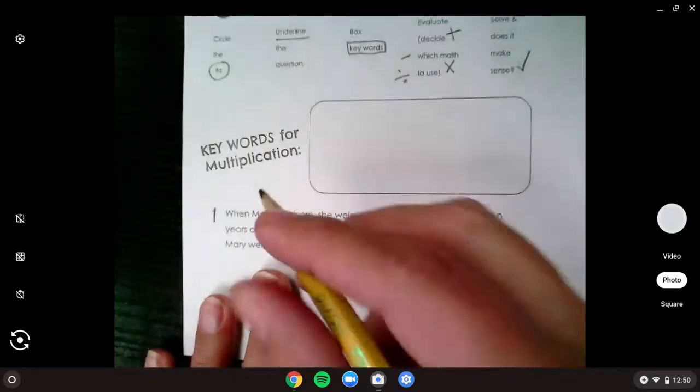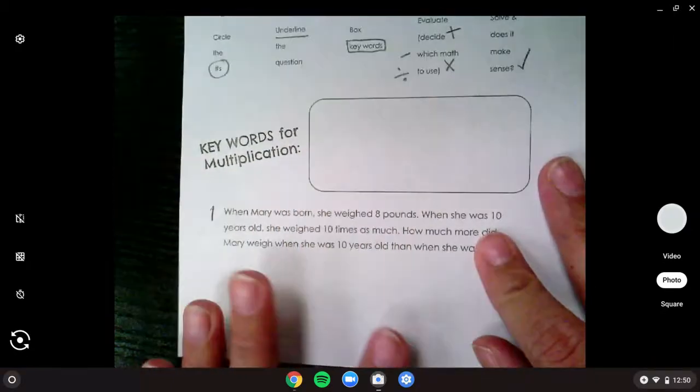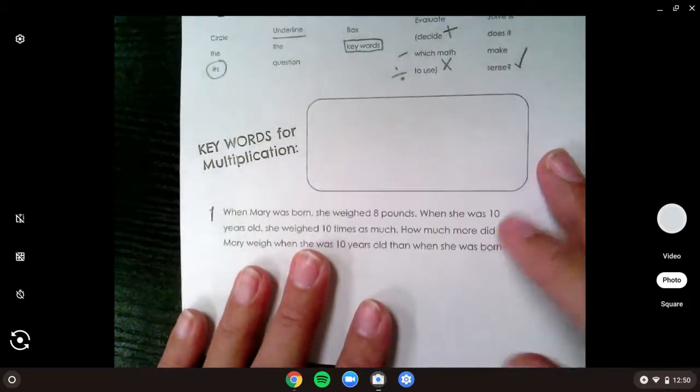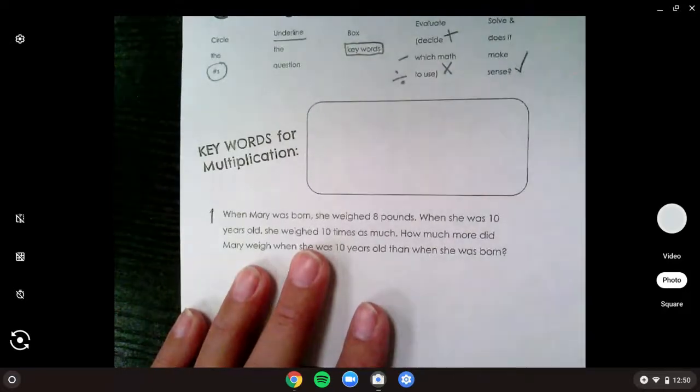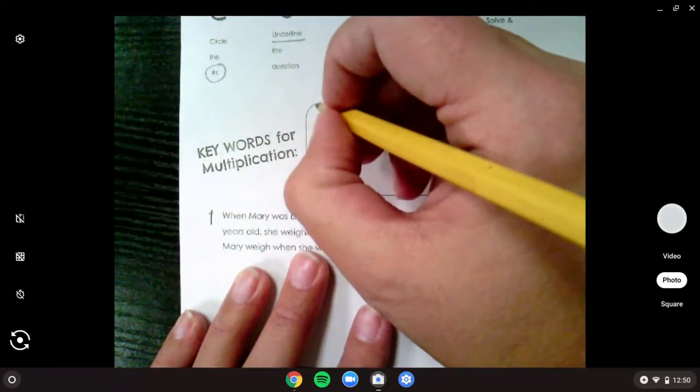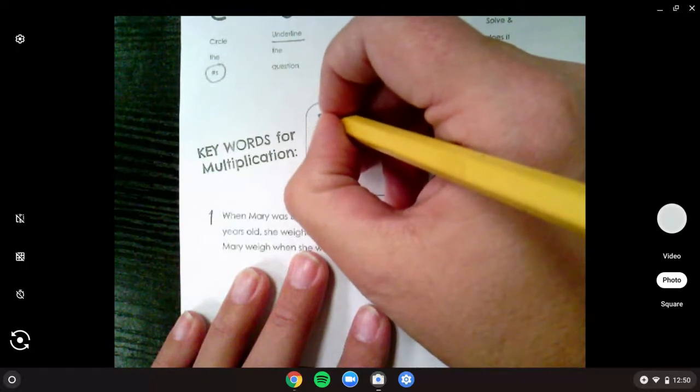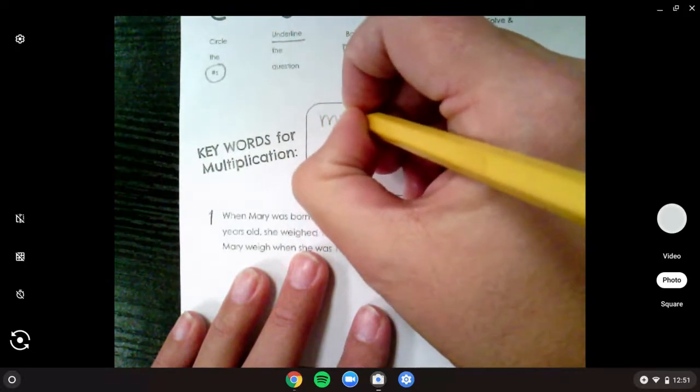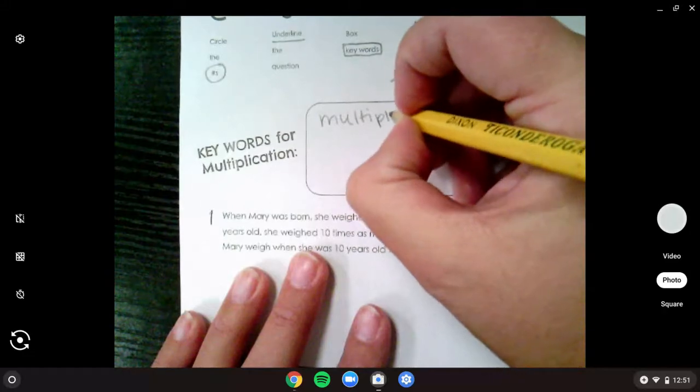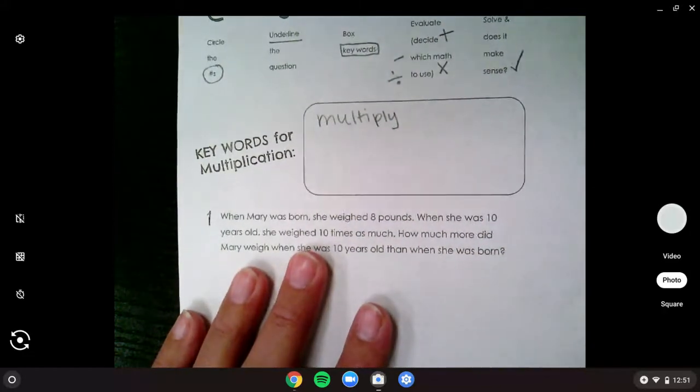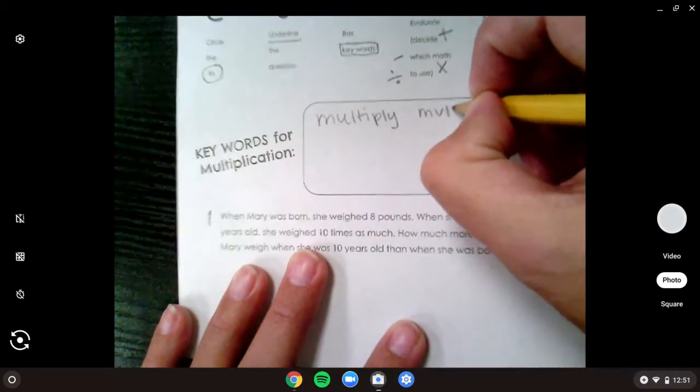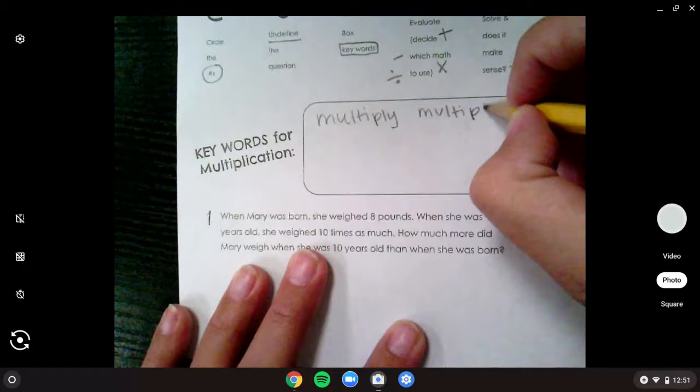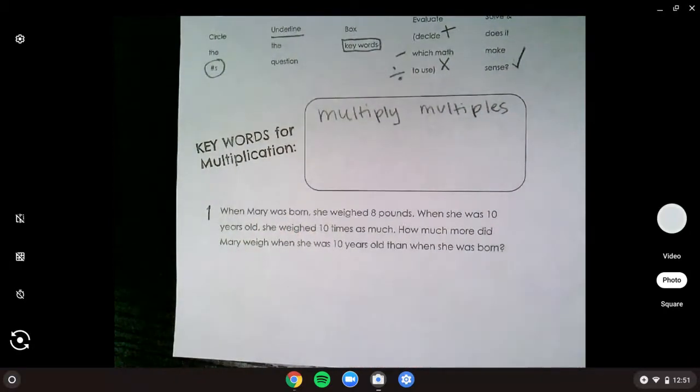Some things we want to look for are keywords for multiplication. In our word problems, they're going to give us those keywords that we're looking out for. When we will know it's multiplication if we see the words like, if we see the word multiply. Go ahead and write these words with me. If we see the word multiply, that tells us we definitely need to multiply. Or if we see the word multiples.